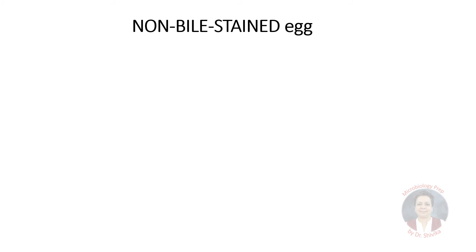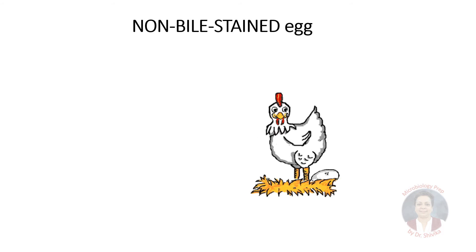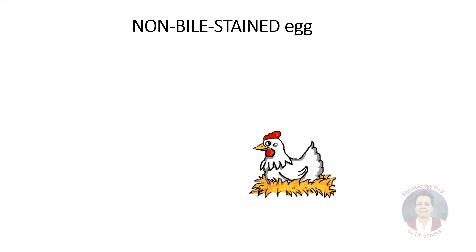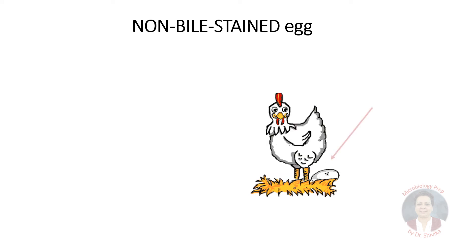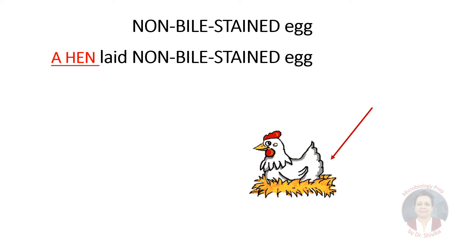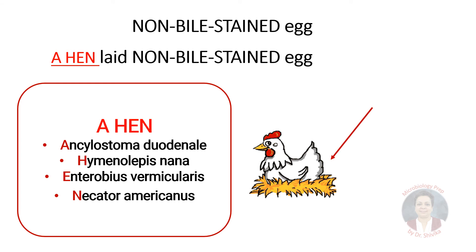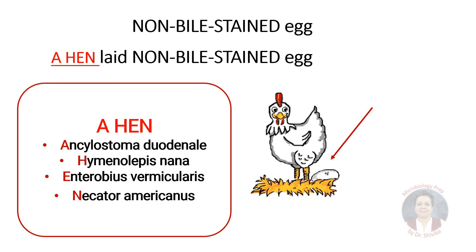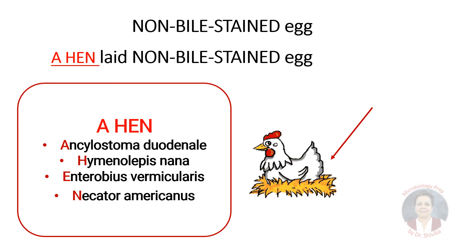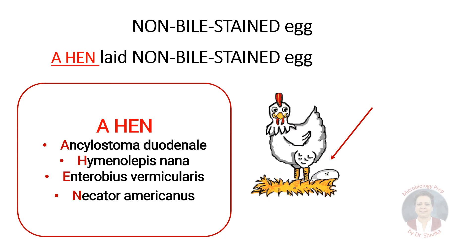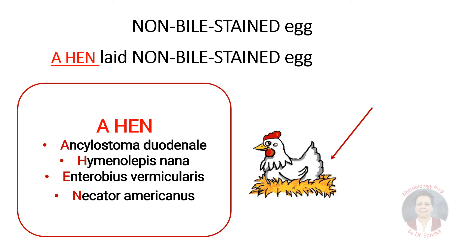Our third mnemonic is for remembering non-bile stained eggs — these are eggs of helminths passed out in stool which do not take up the color of the bile salts. Here we see a hen laying a white colored egg. So 'a hen' is our mnemonic to remember non-bile stained eggs: Ankylostoma duodenale, Hymenolepis nana, Enterobius vermicularis, and Necator americanus.